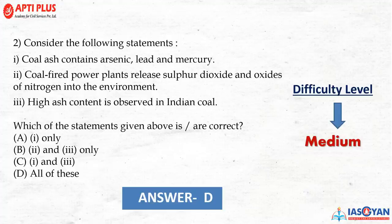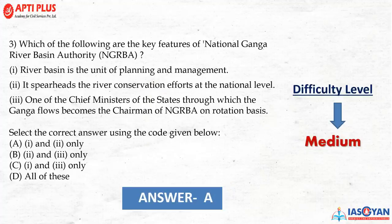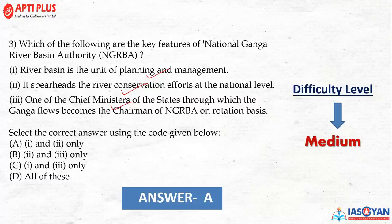Question 2: Consider the following statements — coal ash contains arsenic, lead and mercury; coal-fired plants release sulfur dioxide and nitrogen oxide into the environment; high ash content is observed in Indian coal. The correct answer is all three statements are correct — a medium difficulty question. Question 3: Features of the National Ganga River Basin — the correct option is A, that statements 1 and 2 are correct (medium level). Question 4: The most potent greenhouse gas in terms of efficiency — the correct answer is CFC, an easy question.